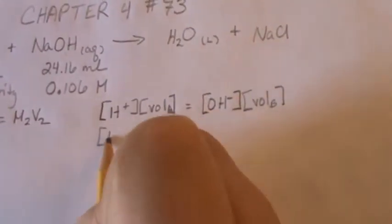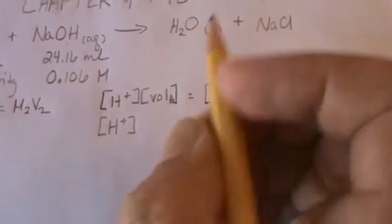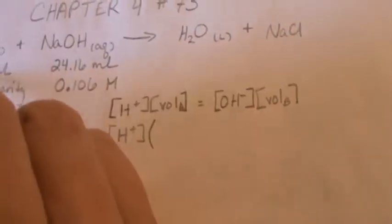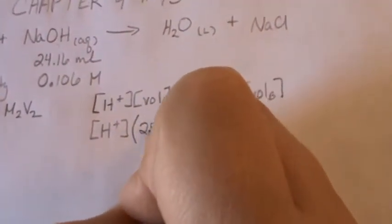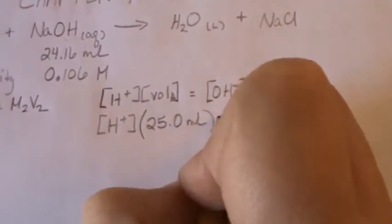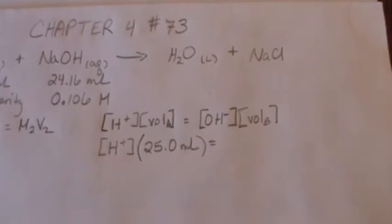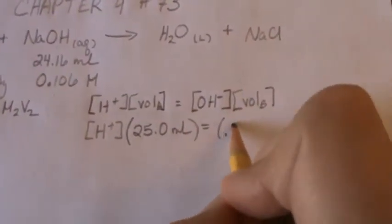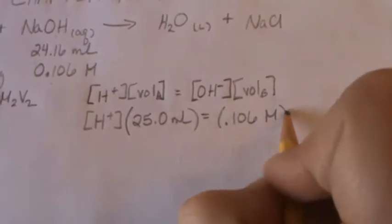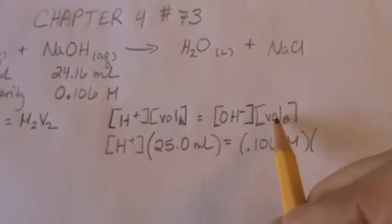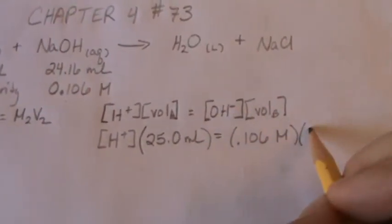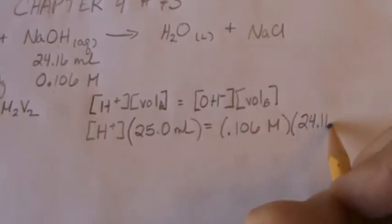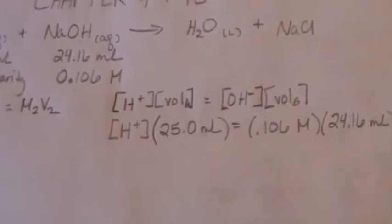So the concentration of our protons times our volume, 25 milliliters, is equal to our hydroxide concentration, which in this case is 0.106 molar, and the volume of our base, which is 24.16 milliliters.